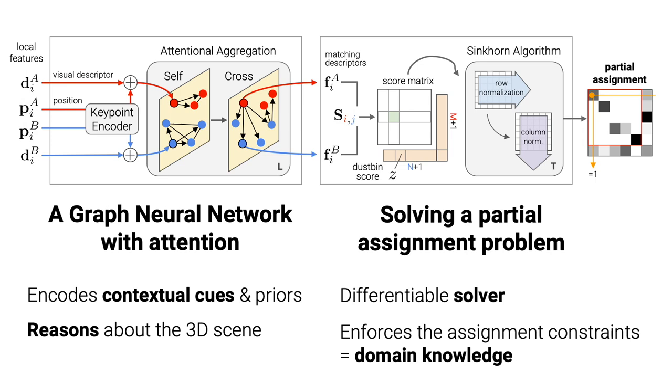SuperGlue is composed of two blocks. First, a graph neural network processes the appearances and positions of two sets of local features with powerful attention mechanisms. It encodes contextual cues and priors into deep features and reasons about the underlying 3D scene. These features define the cost of a partial assignment problem, which is solved with a Sinkhorn algorithm in a differentiable manner. This produces the desired partial assignment, thus enforcing domain-specific constraints.